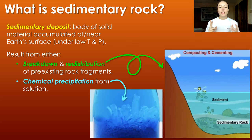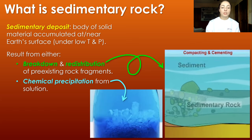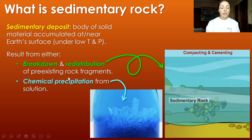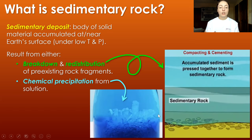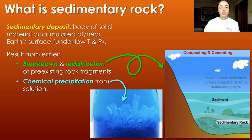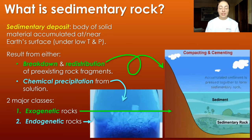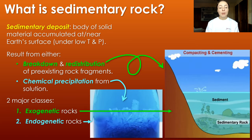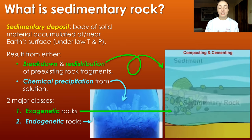The second major way is the chemical precipitation of minerals and rocks from solution. These are the two major ways that rocks can form at earth's surface, and they can be broken up into two major classes.